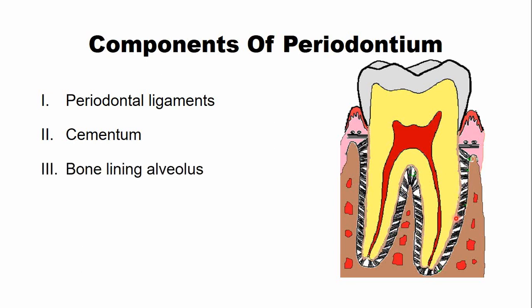The third component is the bone — specifically the portion of the alveolar bone that is lining the alveolar socket. The periodontal ligaments on the other end are embedded into the alveolar bone, so on each side of the periodontal ligament is the cementum and on the other side is the alveolar bone.